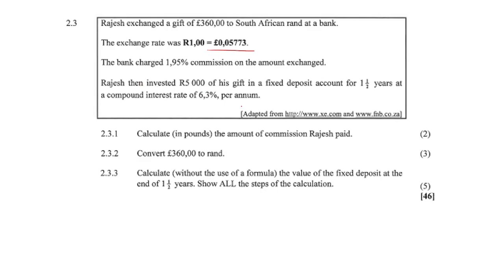Rajesh then invested 5000 Rands of his gift in a fixed deposit account for one and a half years at a compound interest rate of 6.3% per annum. So there's exchange rates and finance — a whole host of stuff going on here.